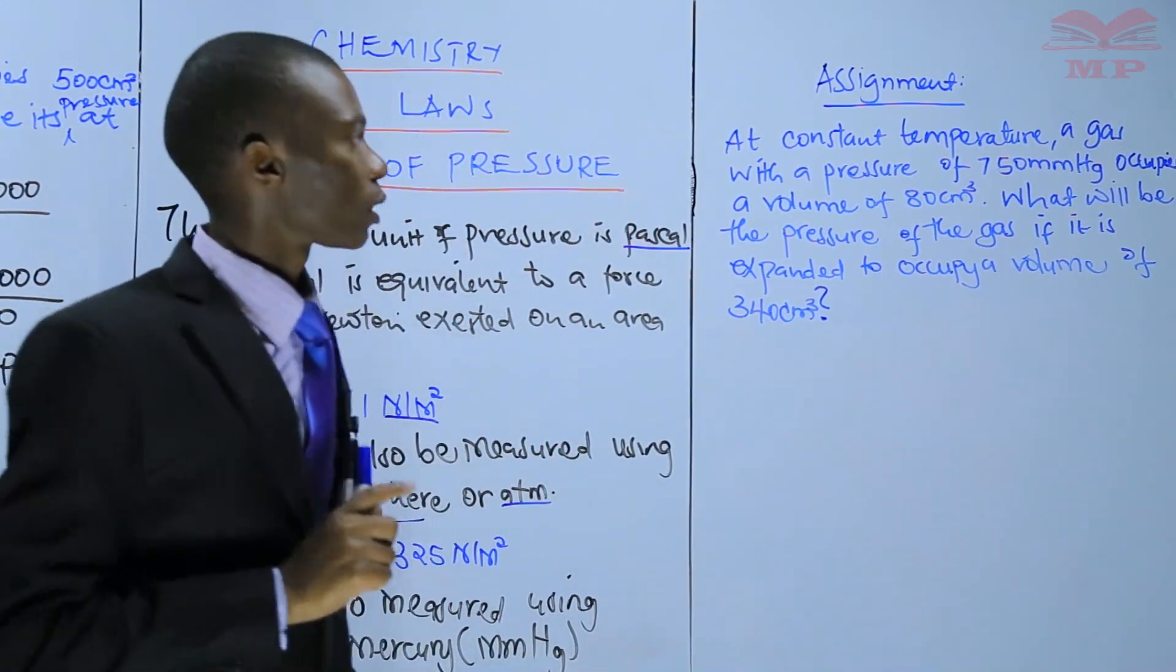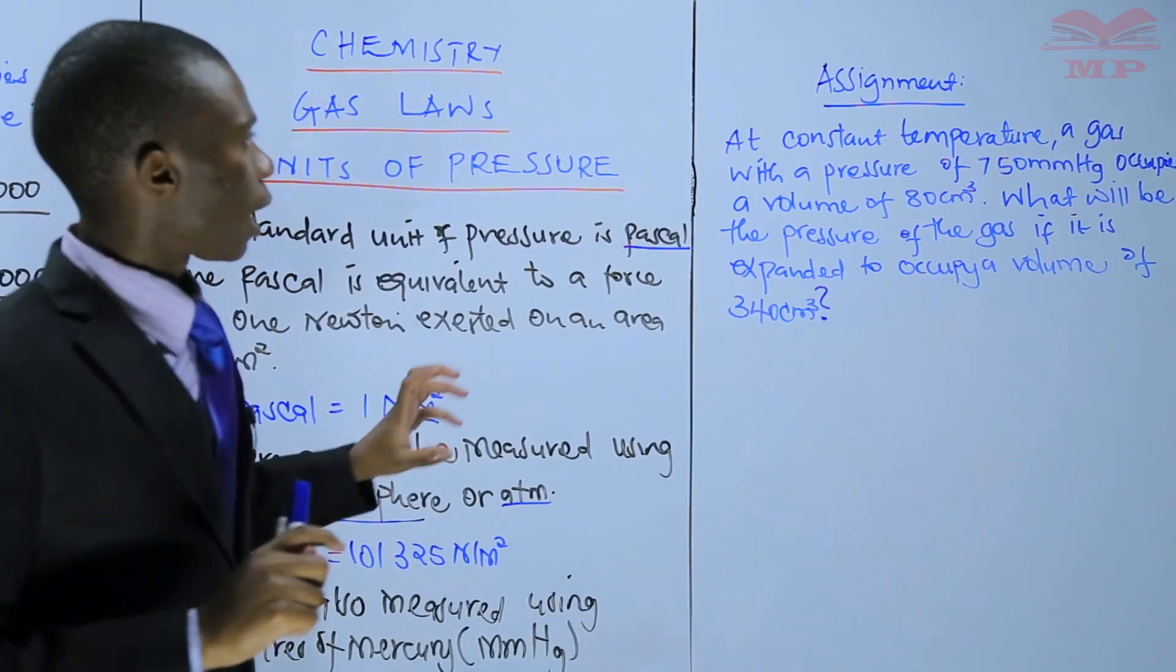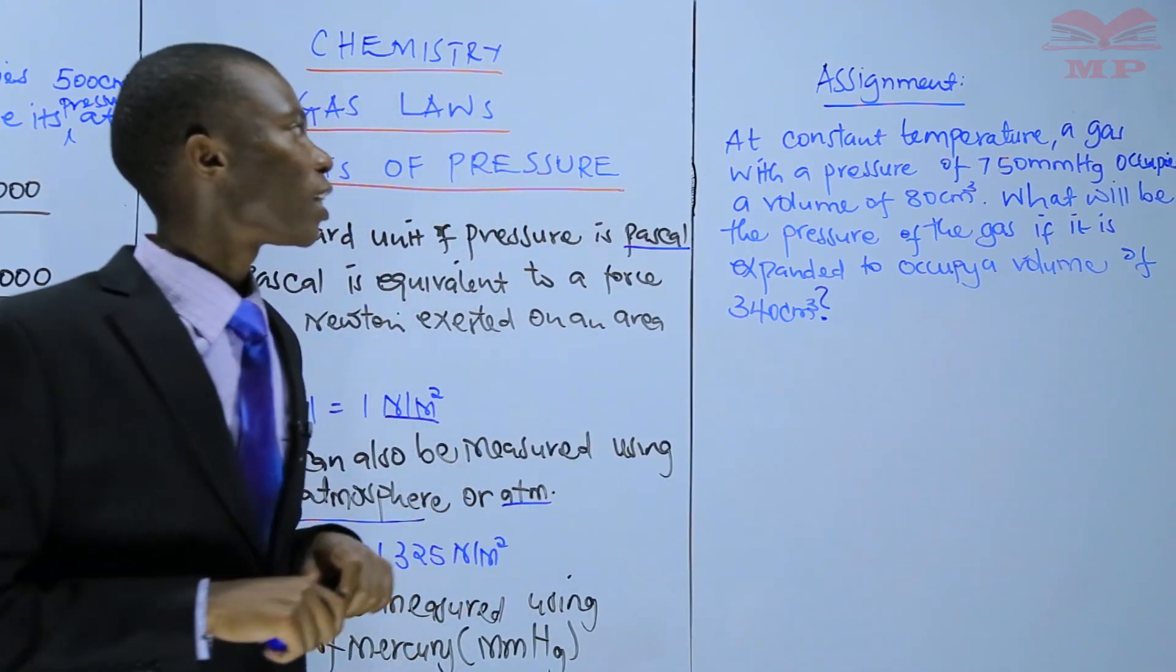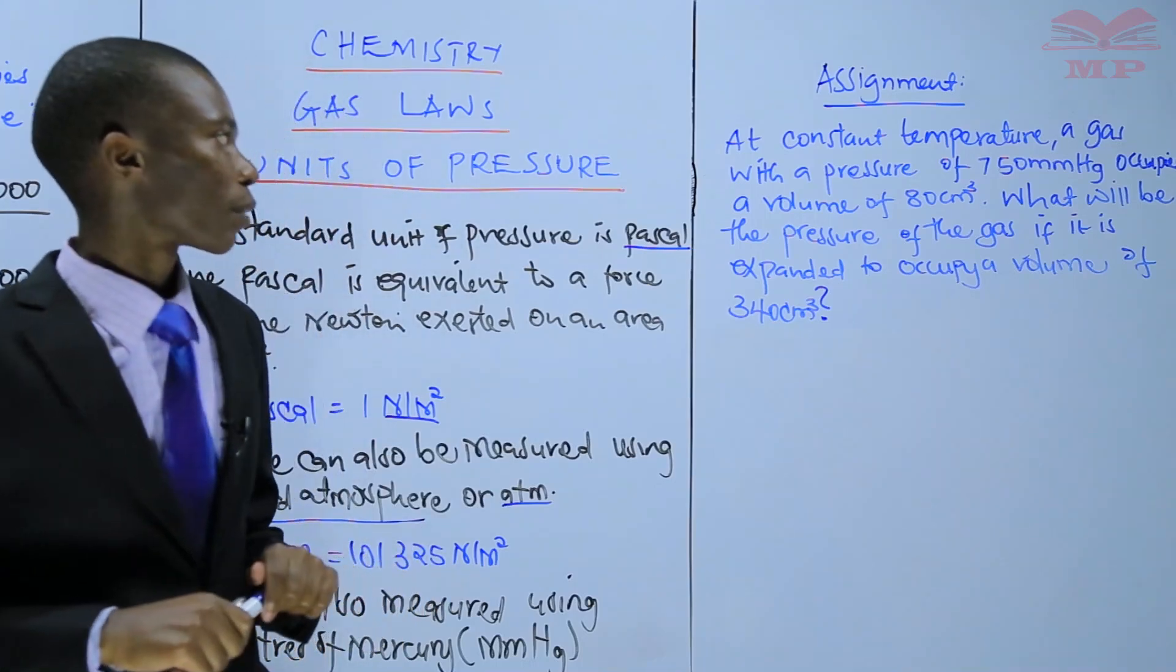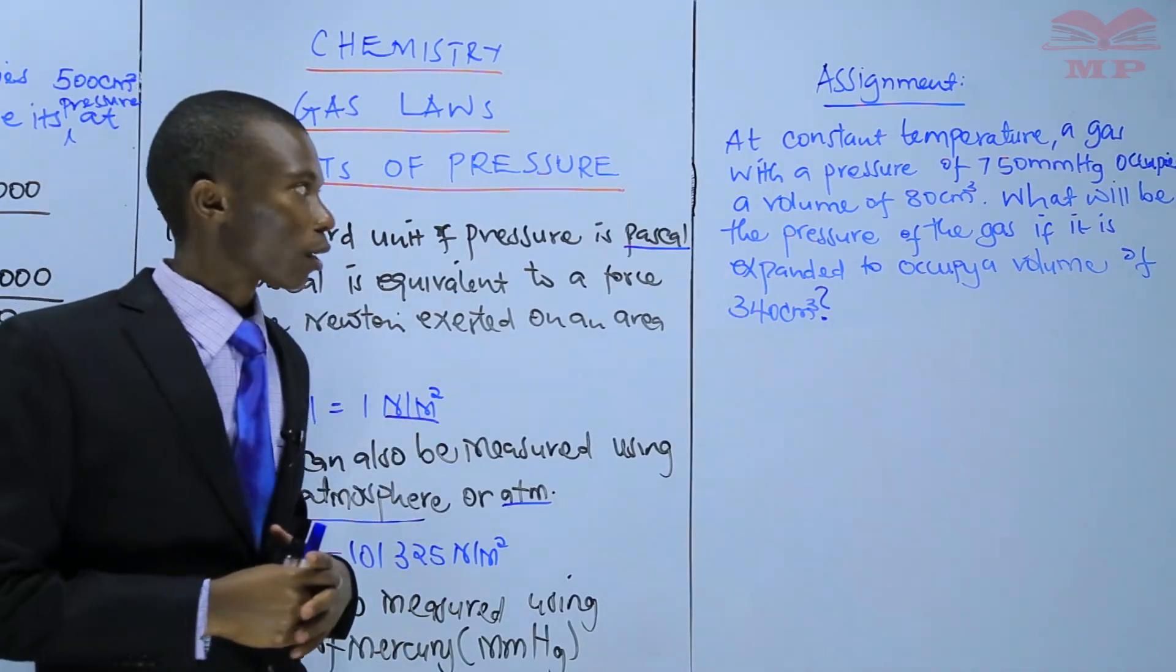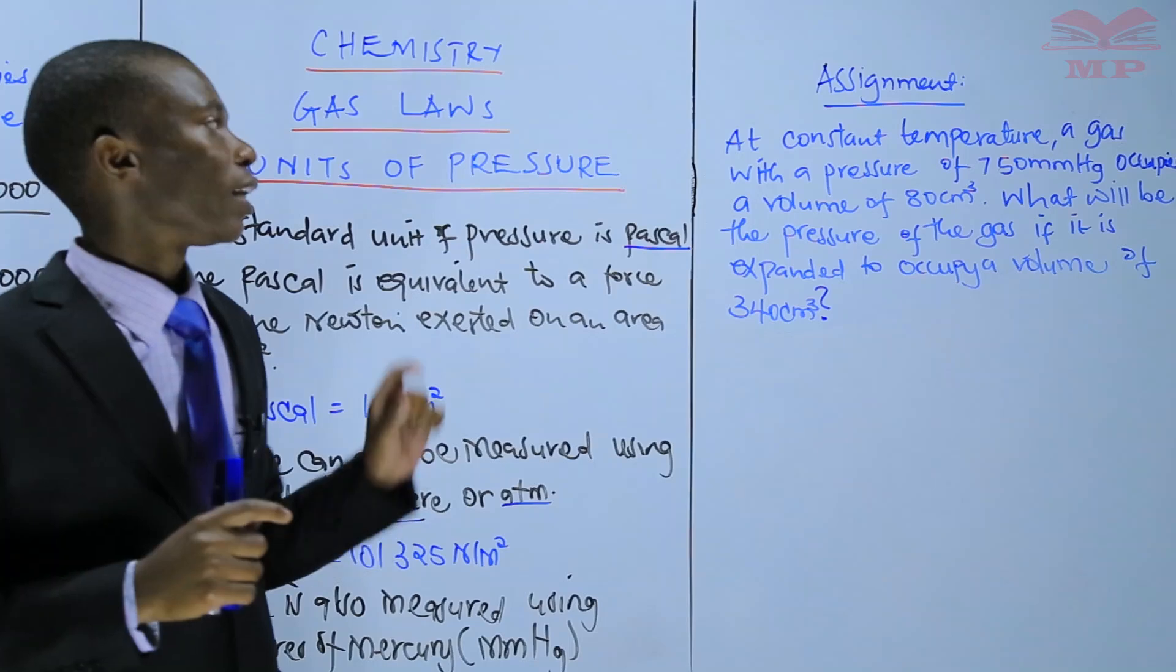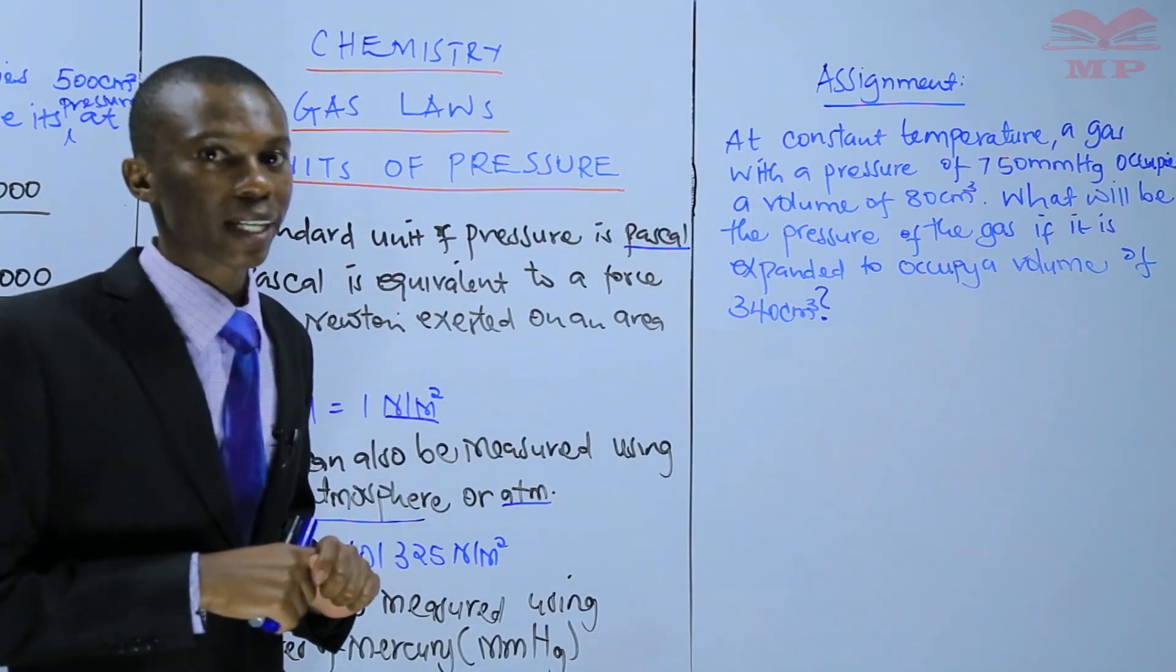The assignment was: at constant temperature, a gas with a pressure of 750 millimeters of mercury occupies a volume of 80 centimeters cubed. The question is, what will be the pressure of the gas if it is expanded to occupy a volume of 340 cubic centimeters?